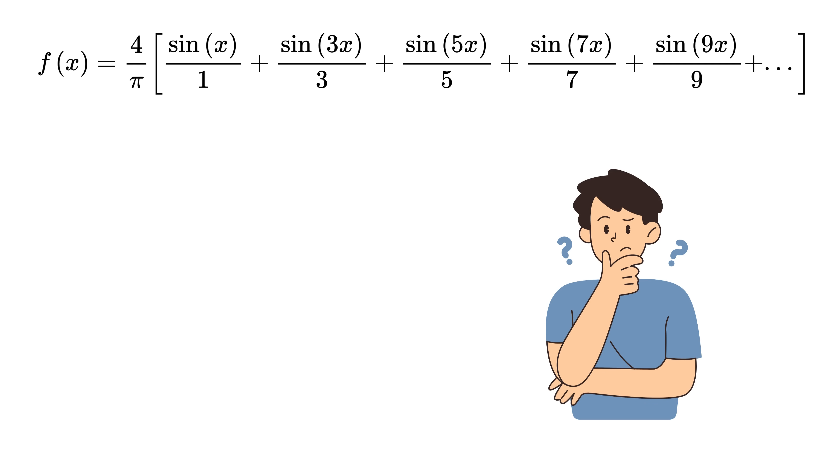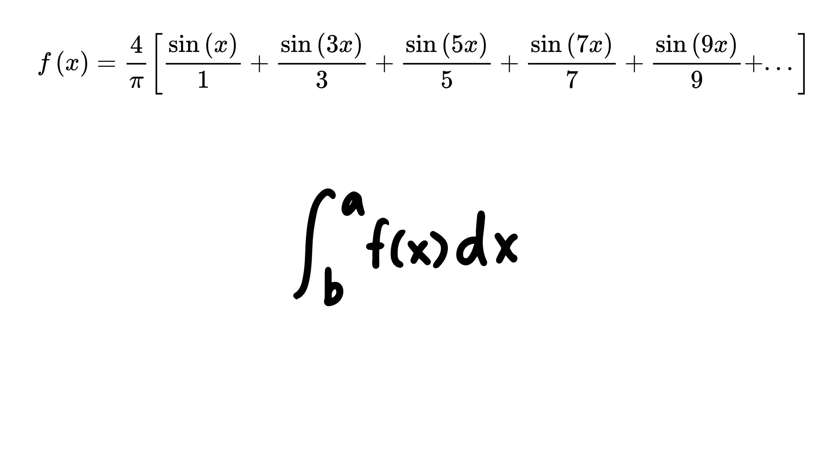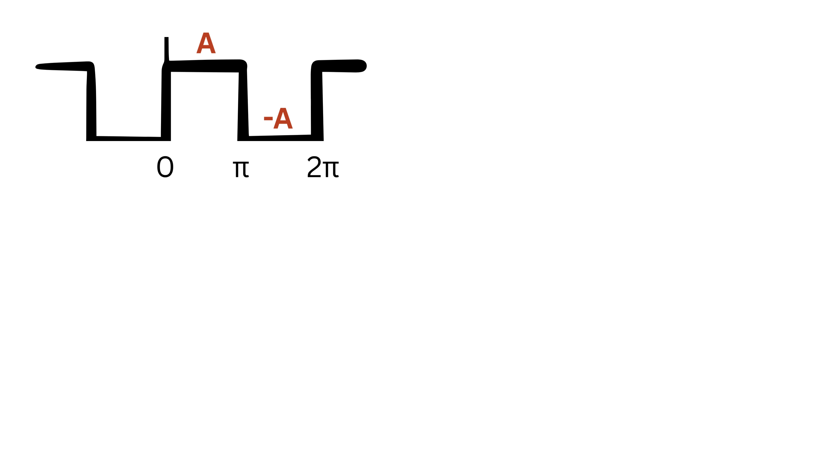But you might be wondering, how did we get this formula? This is where calculus comes into the picture. First, we will define our signal as a square wave function like this. For x between 0 to π, it has some amplitude A. And for x between π to 2π, it has some amplitude negative A. So we'll integrate over the interval 0 to 2π.